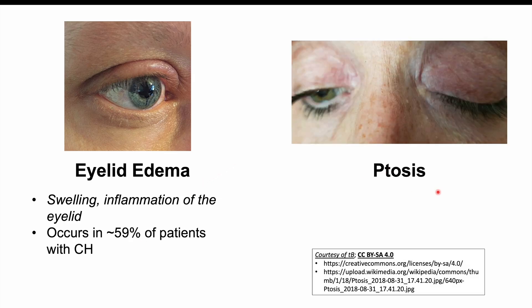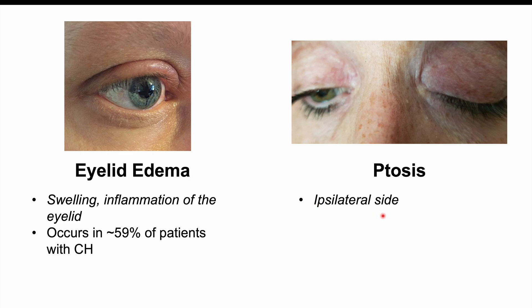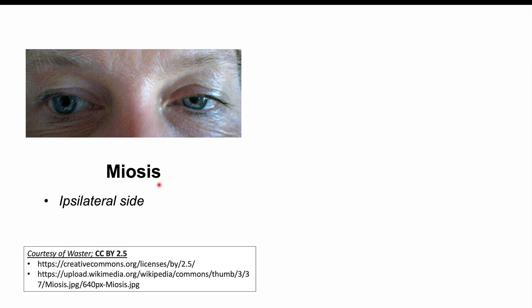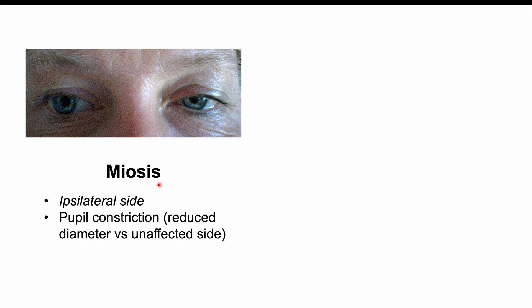We can also see ptosis — a drooping eyelid — on the ipsilateral side, the side where the pain occurs. So we can see a drooping eyelid, a swollen eyelid, and red watery eyes along with that severe pain behind or around the eye. We can also see miosis on the affected ipsilateral side — miosis is pupil constriction, where the pupil becomes smaller in size, with a reduced diameter compared to the unaffected side.